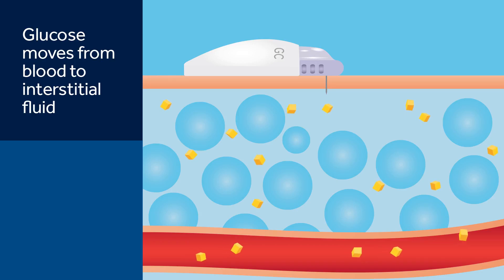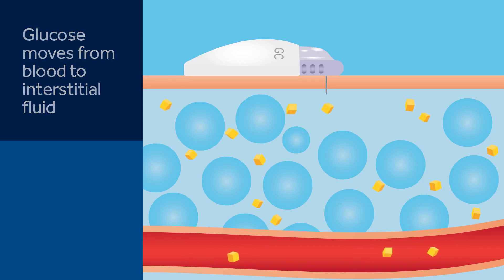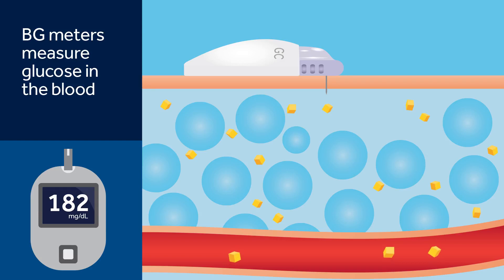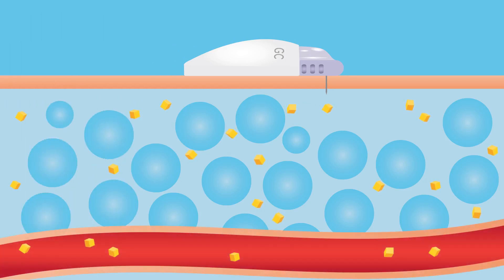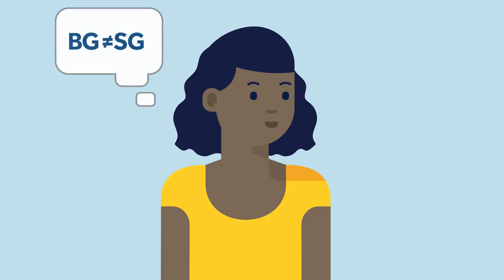Glucose is always moving between the blood and interstitial fluid. BG meters measure glucose levels in the blood, and sensors measure glucose levels in the interstitial fluid. This is why meter readings and glucose readings from your sensor will rarely be exactly the same. This difference between BG and SG is okay and should be expected.